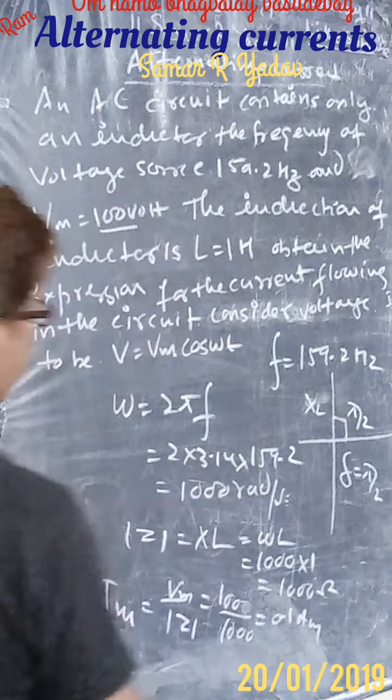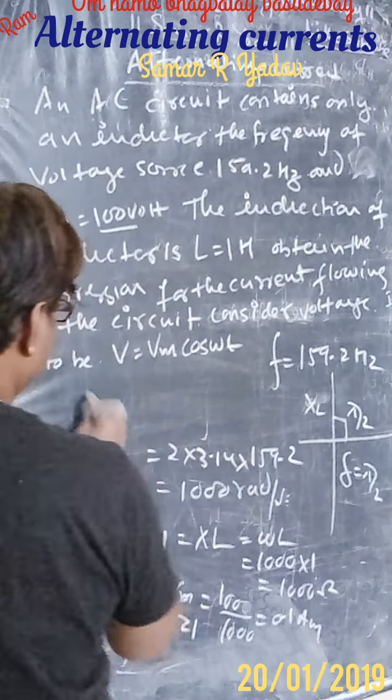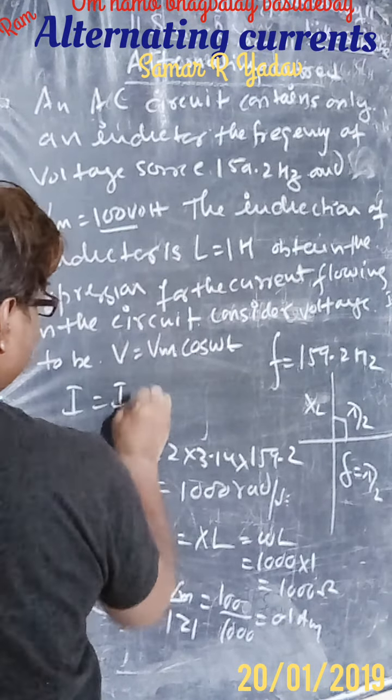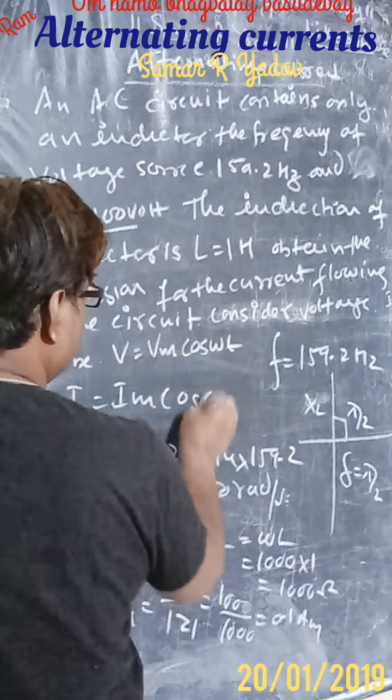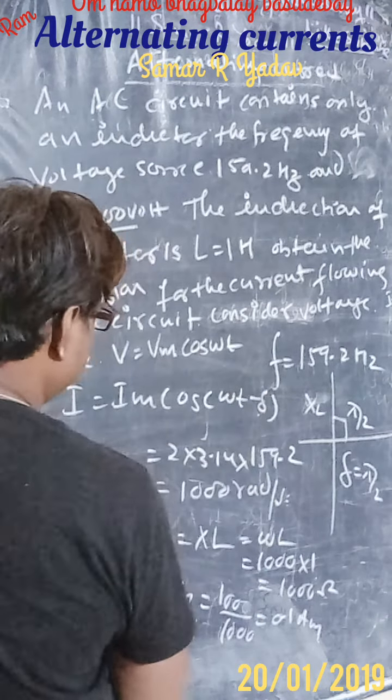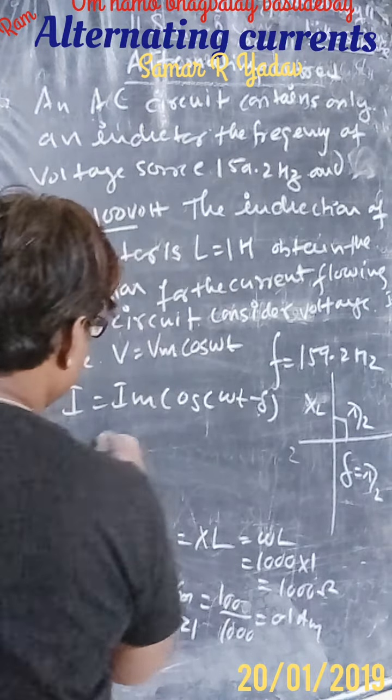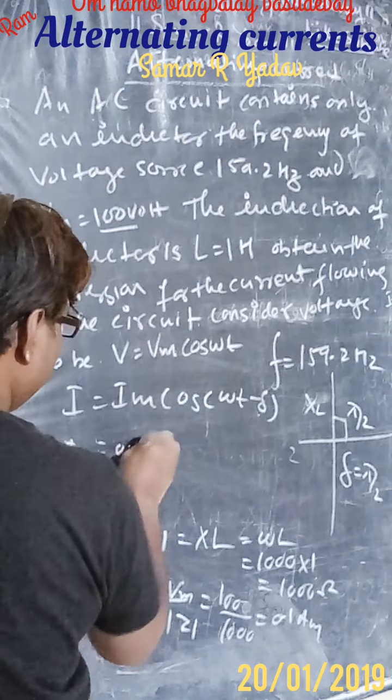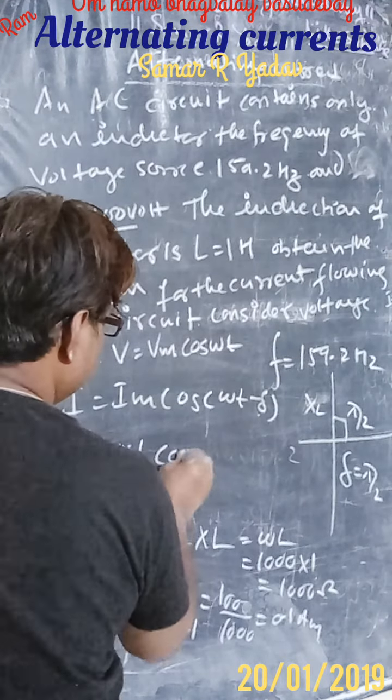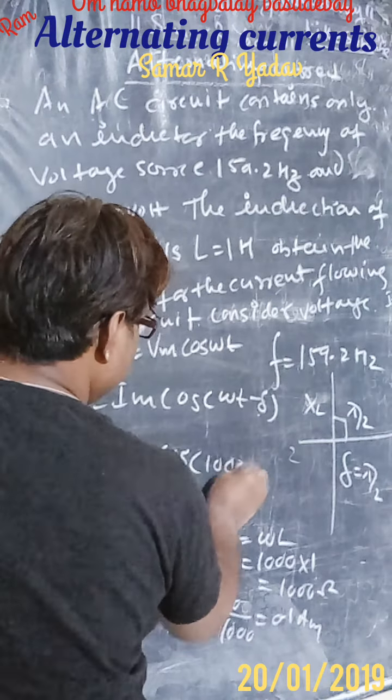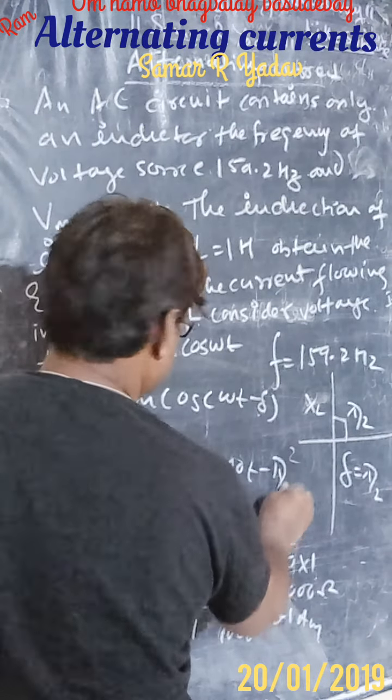Now the equation, the required equation is i equals 0.1 into cos of 1000 into t minus π/2 Ampere.